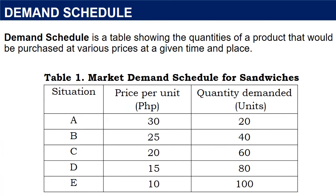A demand schedule is a table showing the quantities of a product that would be purchased at various prices at a given time and place. Table 1 contains a hypothetical schedule of the demand for sandwiches in a local market during school days. The left column shows the various prices while the right column shows the number of units which consumers would choose to buy at a given price. As observed, as the price rises, the quantity demanded declines.